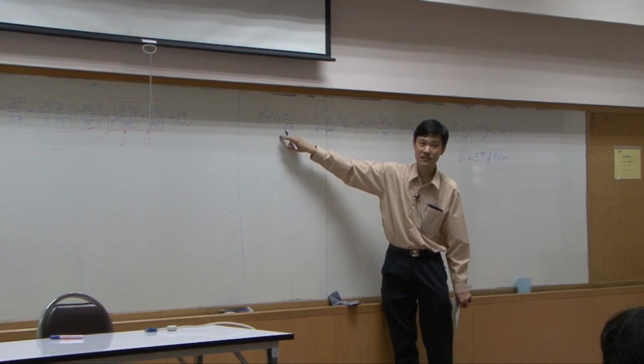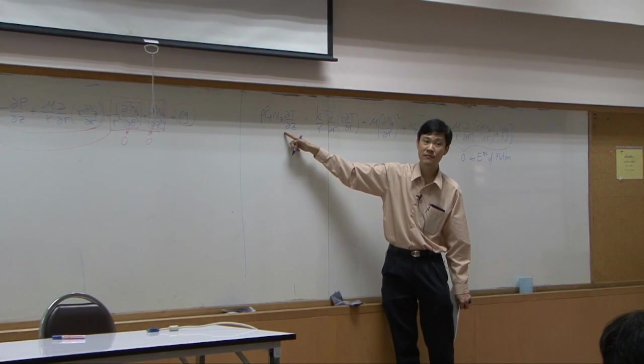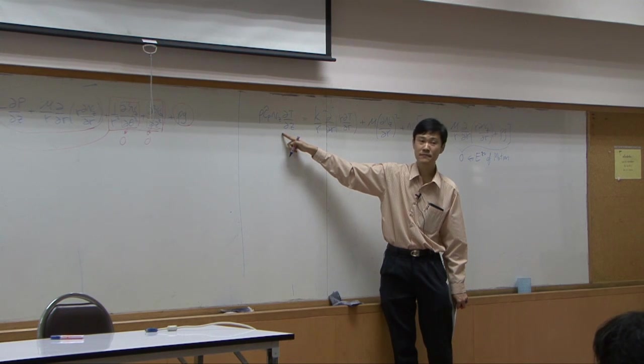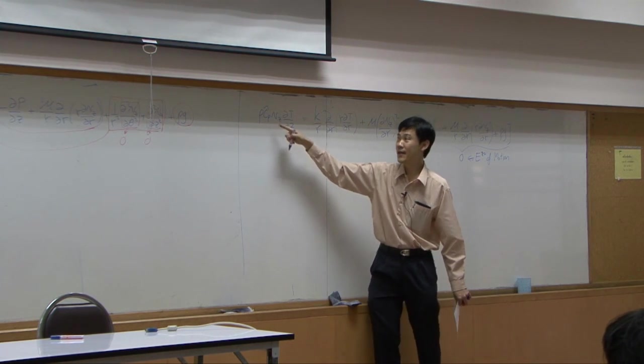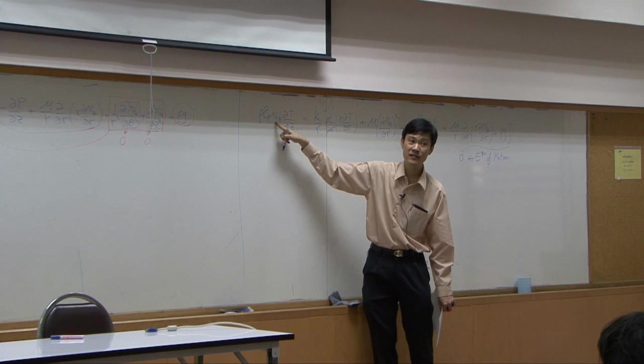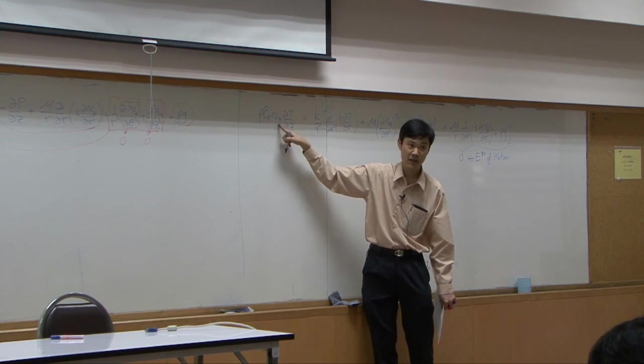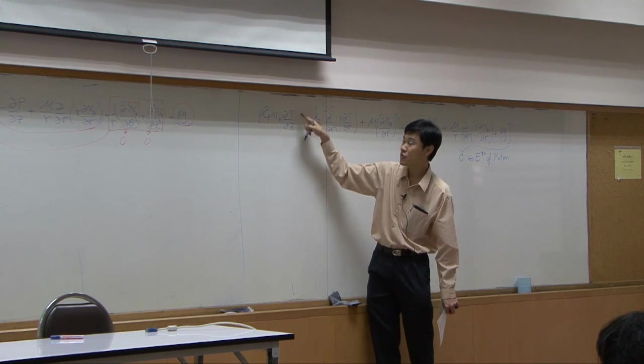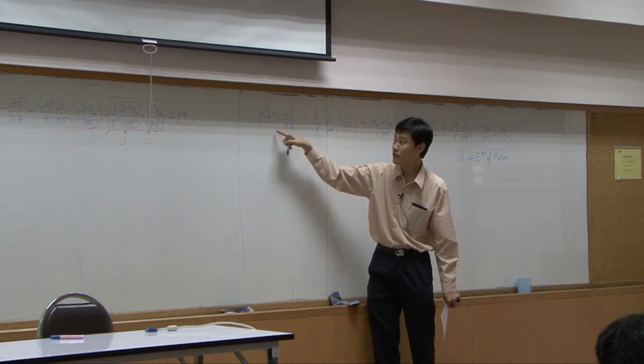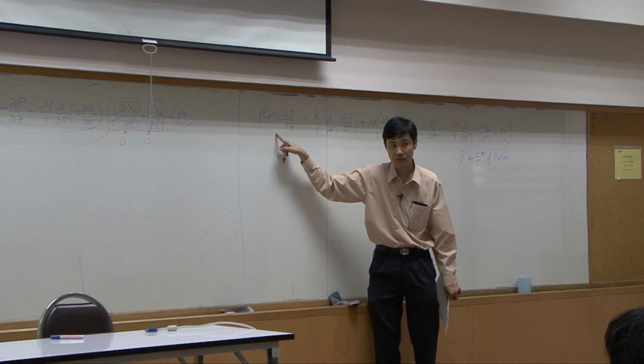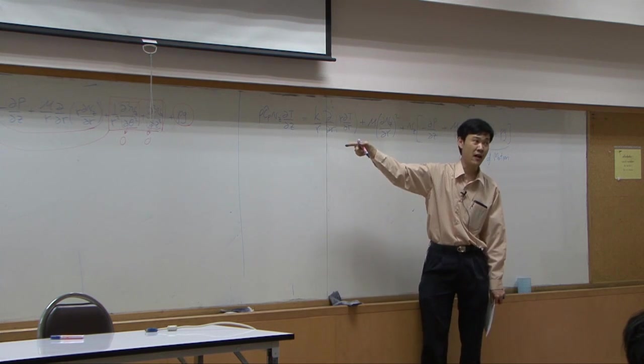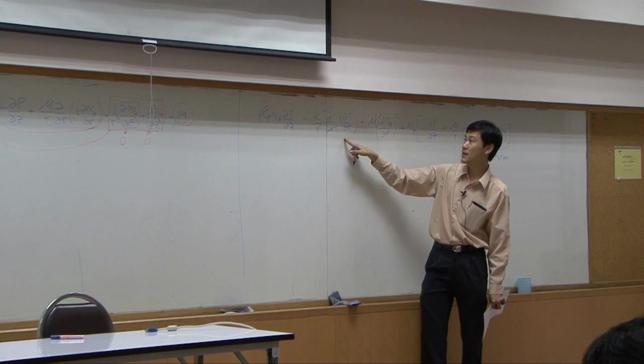Can we drop this term? What does it mean? What does this term represent? Cp times velocity means like convection in z-direction. This is temperature change in z-direction according to convection in z-direction, which is important in our case.